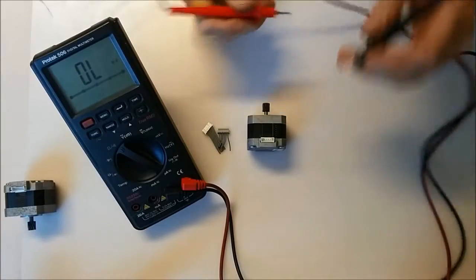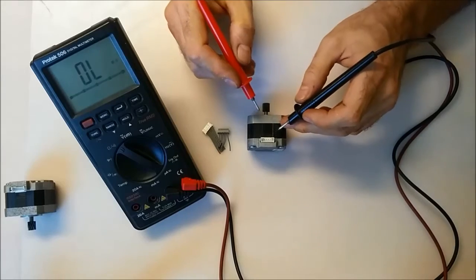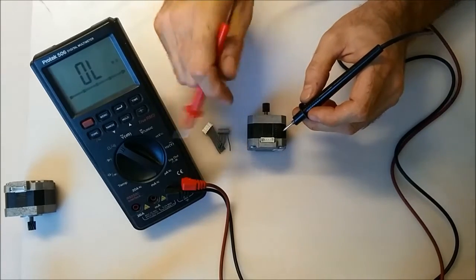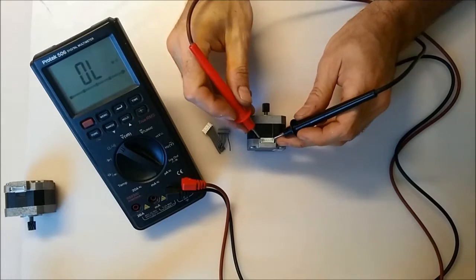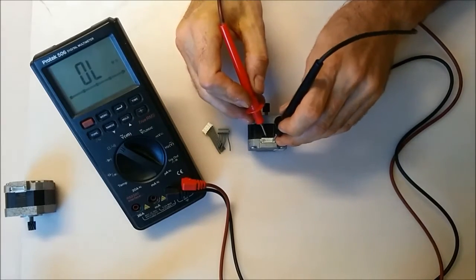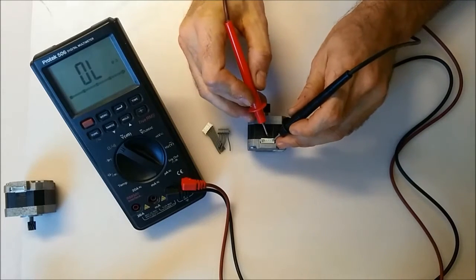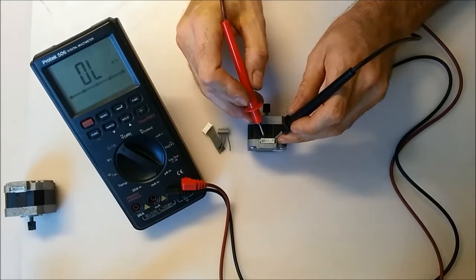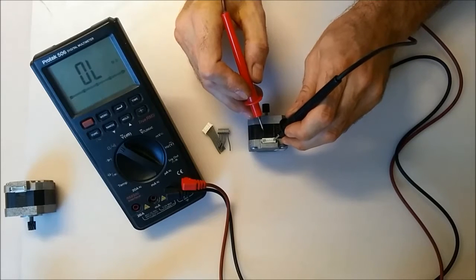Before we start soldering, we need to check the pinout on the motor because some of these are different. We're going to use a multimeter set on ohms to measure the resistance of the windings. Usually the windings are across pins 1, 3, 4, and 6, but sometimes the middle two pins 3 and 4 are swapped around, which is probably the case with this motor. We're going to put one of the probes on the end pin and probe the center pins.